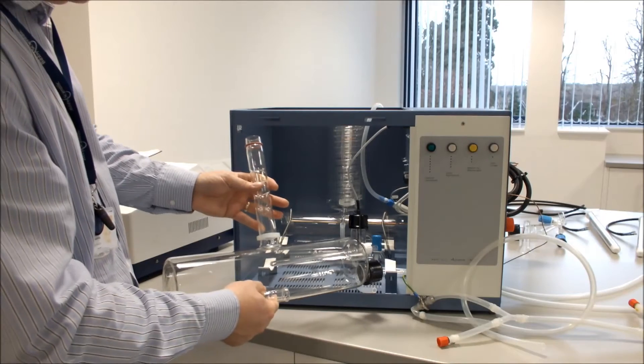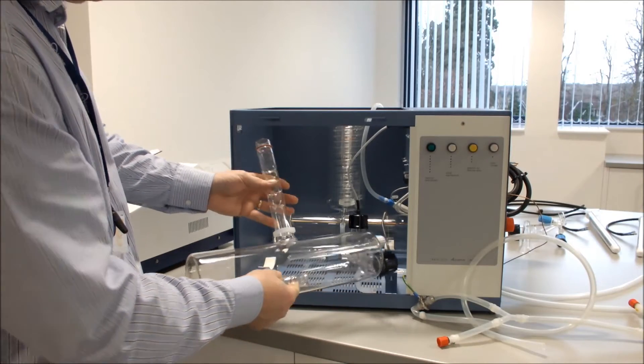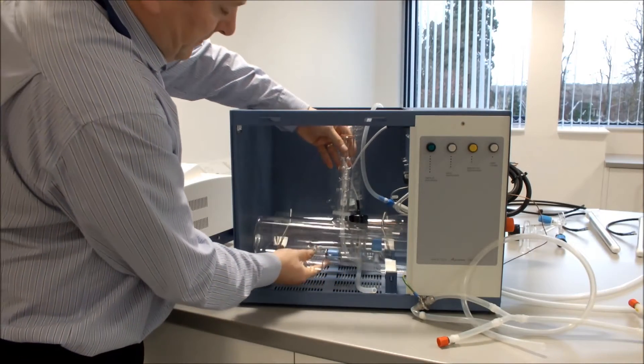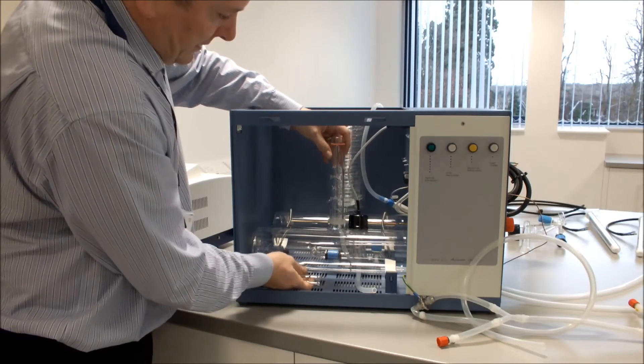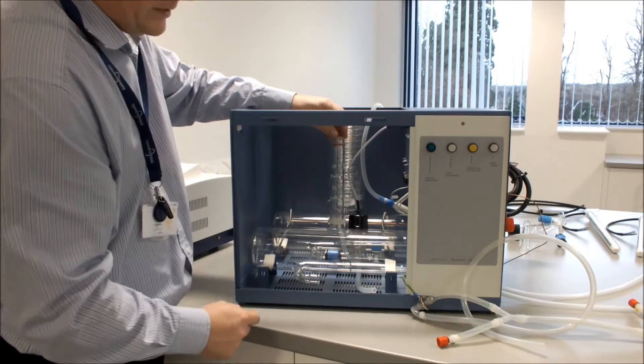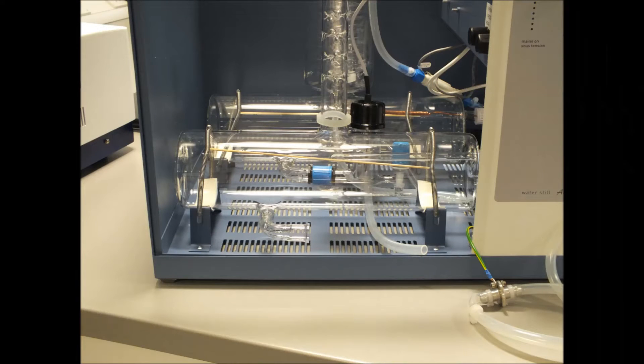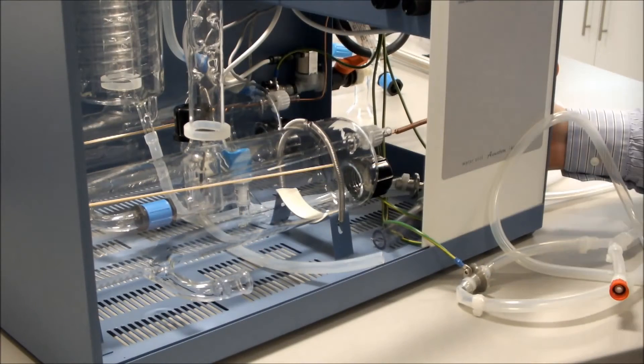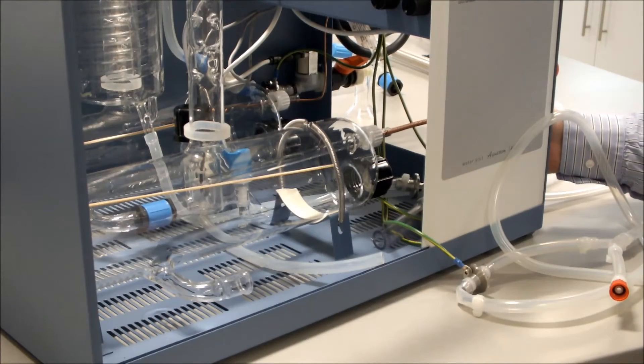Next thing to do is to refit our front boiler. So we put it in place like so and we will then retain it with our retaining springs. We then refit our thermostat into our boiler.